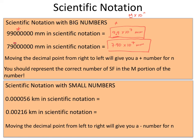For small numbers, the same approach applies — we still need only one digit in front of the decimal. But the decimal point starts on the left side of these numbers, so we need to move it to the right, which makes our exponential value more negative. In this example, we move the decimal five places to the right, giving us 5.6 times 10 to the negative fifth. There were two sig figs in this number, and we have two sig figs in the m portion of the scientific notation form.